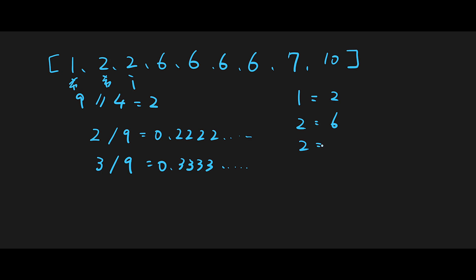Moving forward, the current number is 2 and the number two steps ahead is 6, and they are equal. So we return 6. We confirm that in that range we have three 6s — that's at least 0.333, or 33%, which is more than 25%.